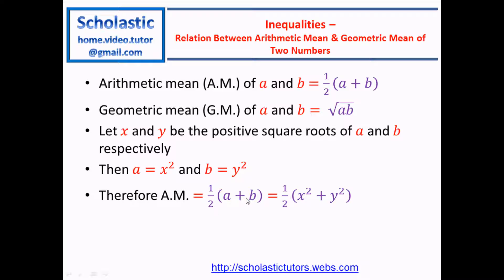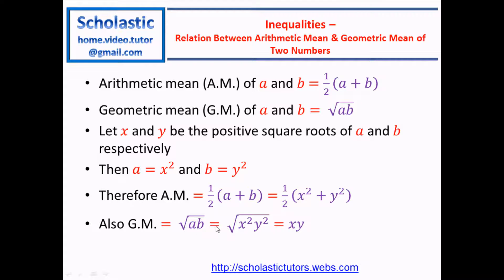Arithmetic mean: half of (a + b) is equal to half times (x squared + y squared). Similarly, we can do that for the geometric mean, where geometric mean is the square root of a times b, which equals the square root of x squared times y squared. That is equal to the square root of (xy) squared, and when you take the square root, it becomes xy. That is the geometric mean of a and b in terms of x and y.